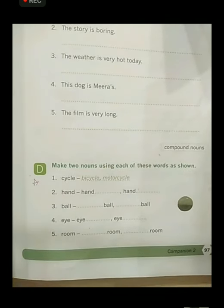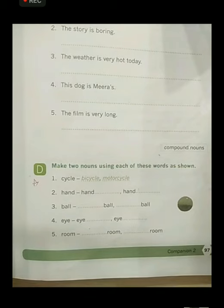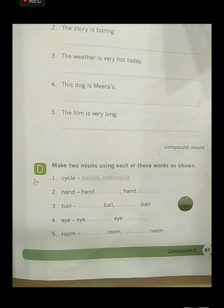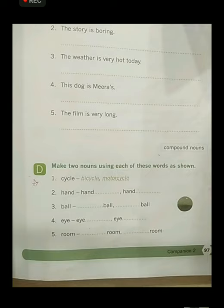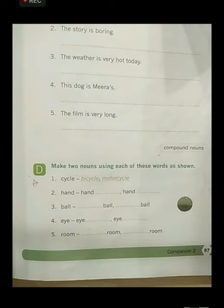So, this is our page number 97 children. Make two nouns using each of these words as shown. Now, here we have to add one word to the given letter to make a new word that is a compound word. The first one has already been done for you. That is cycle. What is a new word made? That is bicycle and motorcycle.